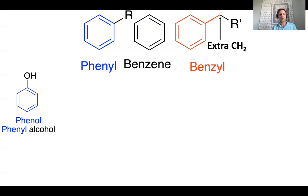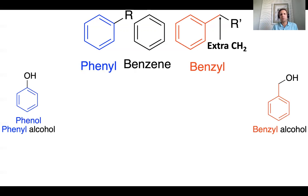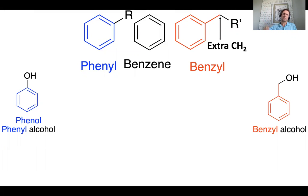How does this manifest in different molecules? We can have phenol, or phenyl alcohol — in that case the OH group is directly attached to the benzene ring. We should contrast that with benzyl alcohol, where we have the benzene ring, then the extra CH₂ group, and only then do we reach the alcohol — the OH part.